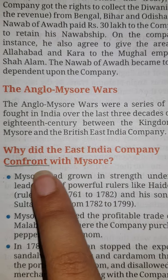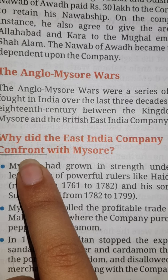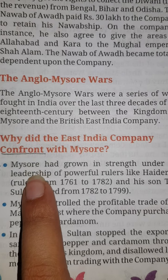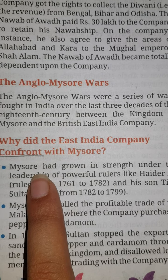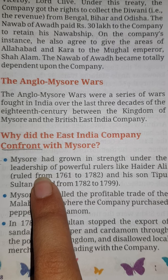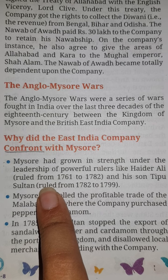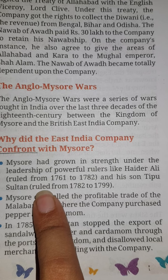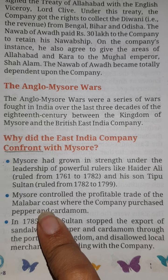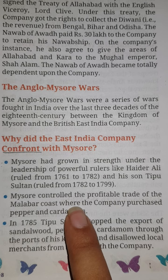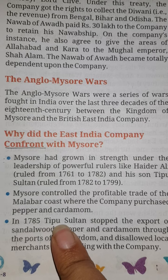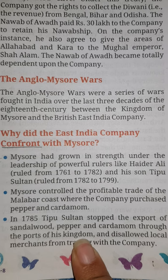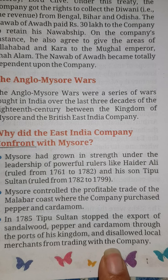Why did the East India Company confront Mysore? Mysore had great rulers like Hyder Ali and his son Tipu Sultan. Mysore controlled the profitable trade of the Malabar coast, where the company purchased pepper and cardamom. In 1785, Tipu Sultan stopped the export of sandalwood, pepper and cardamom through the ports of the kingdom and disallowed local merchants from trading with the East India Company.